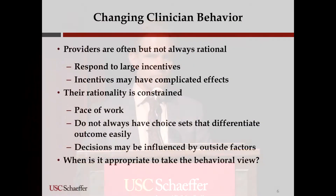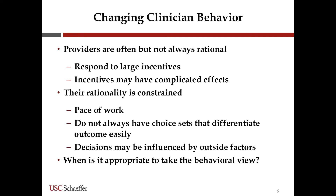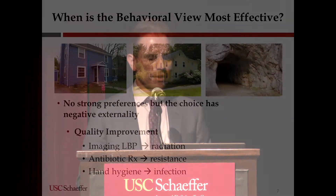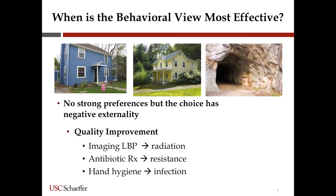What we know is that clinicians are often rational, but not always rational. They may respond to large incentives, but these incentives have complicated effects. Their rationality is constrained by the pace of their work. They don't always have choice sets that clearly distinguish good and bad outcomes immediately, and their decisions might be influenced by outside factors. This leads us to ask: when is it appropriate to take a behavioral view of the clinician? I want to be careful to say we shouldn't think providers are completely irrational, but certainly when there's no strong preference in their choice set and there's some negative externality involved, that's when we should consider this behavioral view.